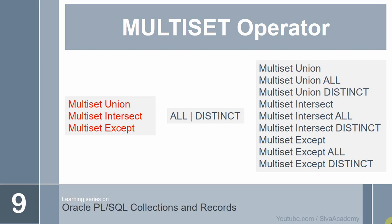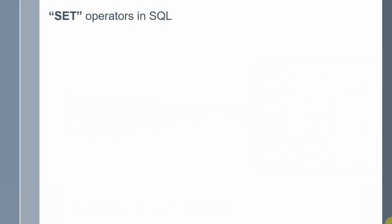Generally, in real time, whenever we are working with collections, many times we will get a requirement like we want to combine the elements of various collections into a single one. And sometimes we want to check what are the common elements present across the collections. In those scenarios, we can use the multiset operator. This multiset operator is very much similar to the set operator in SQL. The only difference is the set operator will act on the result set of an SQL, whereas the multiset operator will act on the elements of the collection.